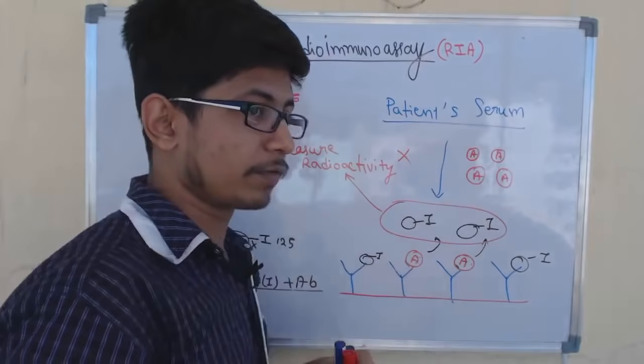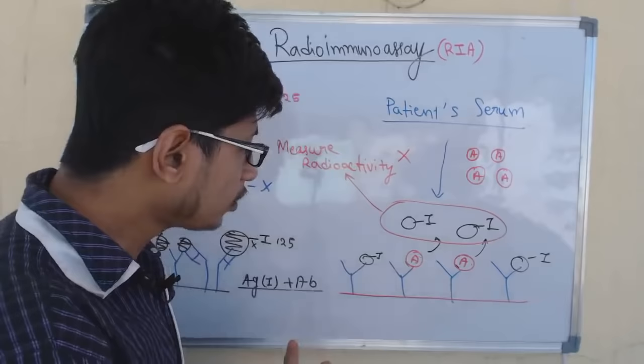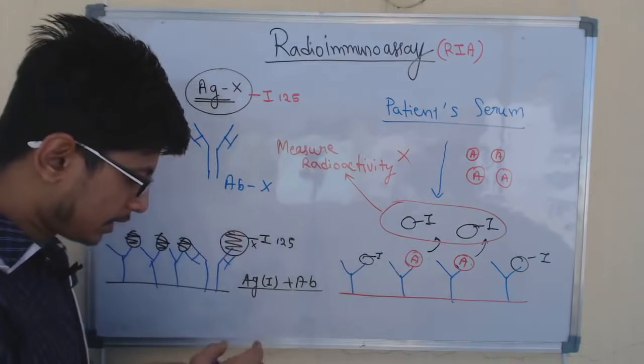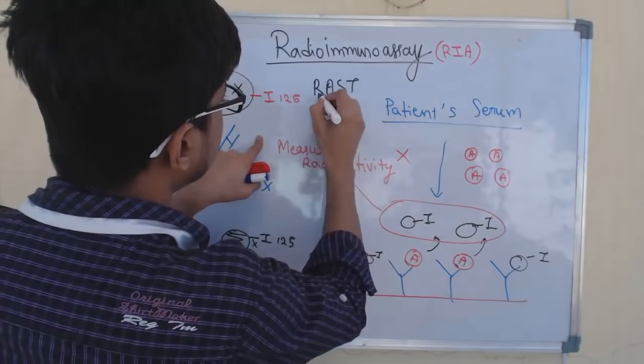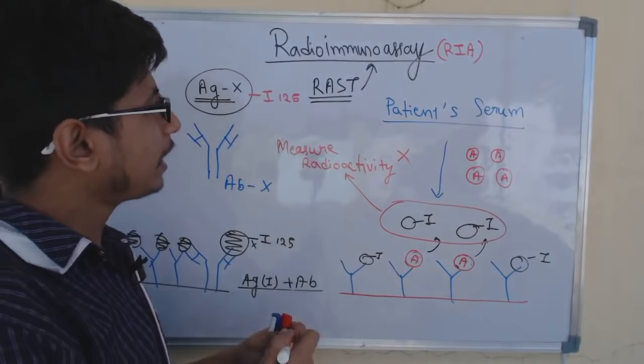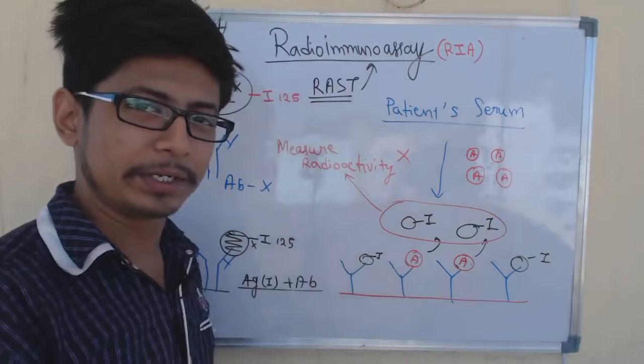We can also detect the presence of hormones such as insulin using this process. Additionally, we can detect allergens that are present in our body and cause allergic reactions using radio immunoassay. The process used to detect allergens is known as RAST — radioallergosorbent assay — which is another type of radio immunoassay. So RIA has multiple advantages and applications.